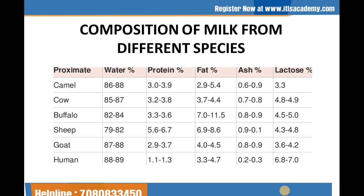Here are certain compositions that we get in milk from different species. We get milk from different species and they possess different compositions. For example, camel's milk consists of 86 to 88% water, 3 to 3.9% protein, 2 to 5.4% fat, 0.6 to 0.9% ash, and 3.3 to 3.9% lactose. Let's talk about cow's milk.